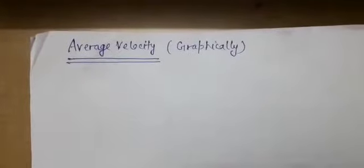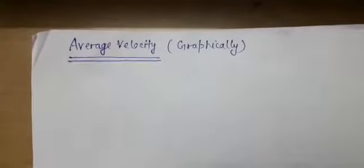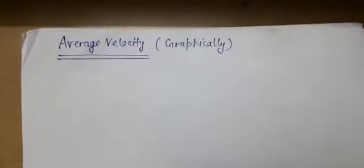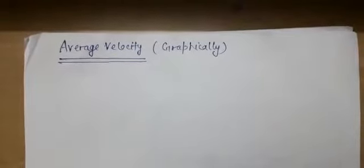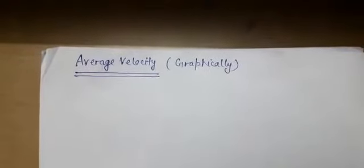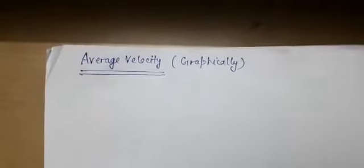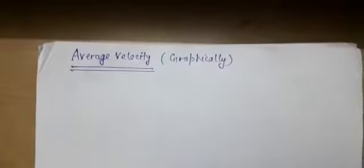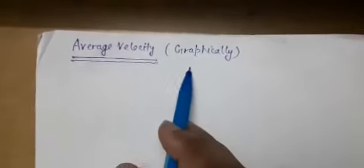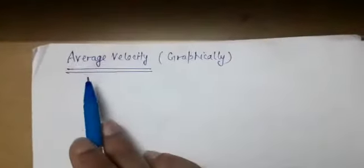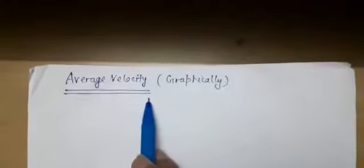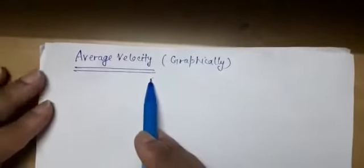Good morning students. In the previous class we discussed the concept of uniform and non-uniform motion. On the basis of non-uniform motion we also discussed average velocity and instantaneous velocity. Today we will study the graphical discussion of average velocity — how can we find average velocity graphically?